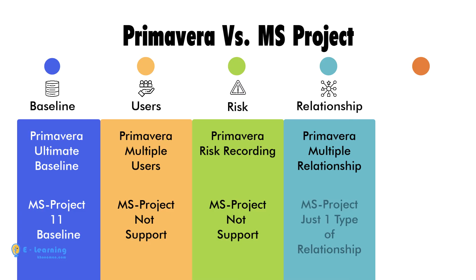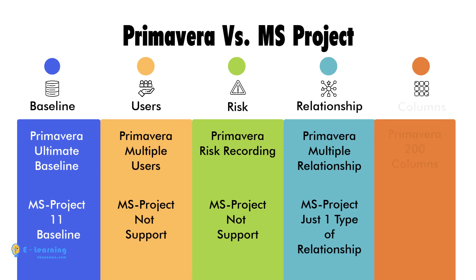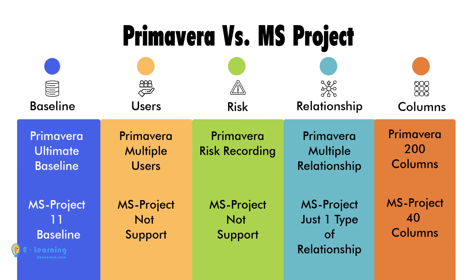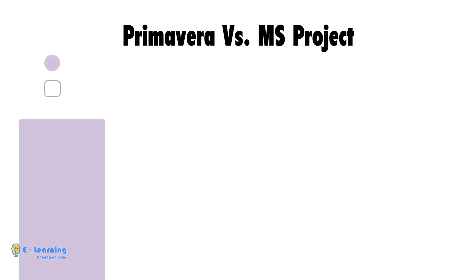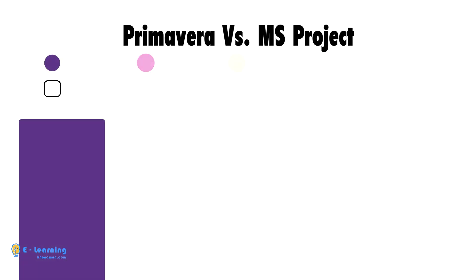But MS Project allows only one type of relationship between activities. Additionally, Primavera supports 200 columns, but MS Project supports just 30 columns.